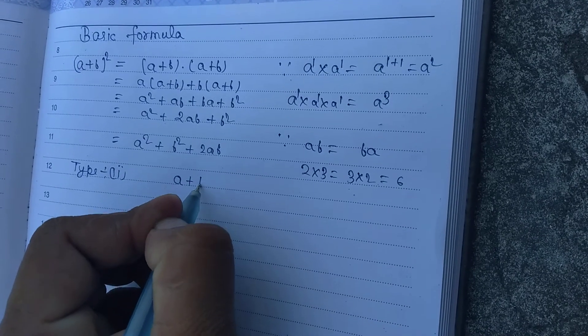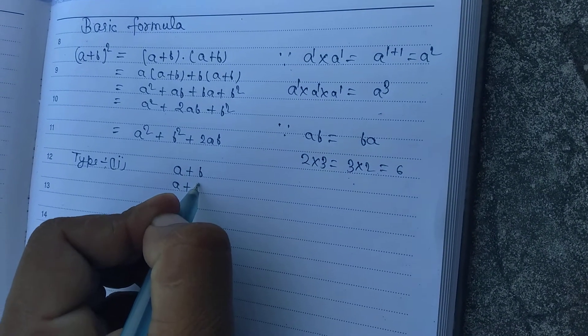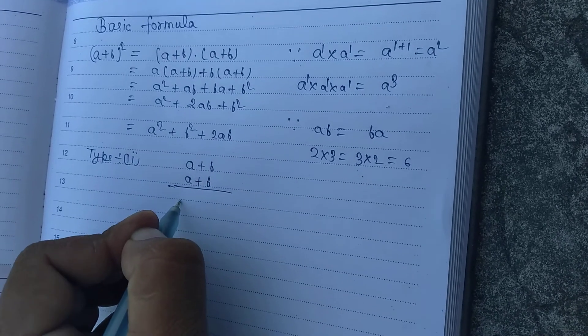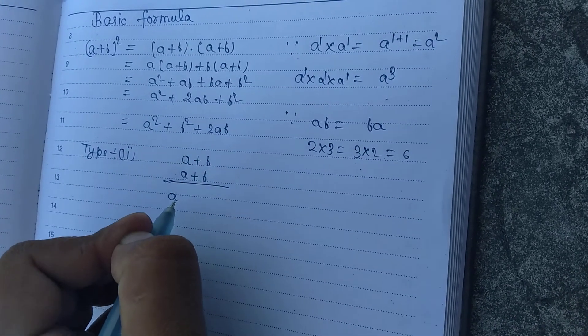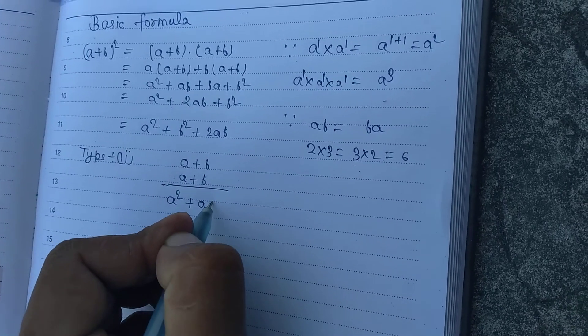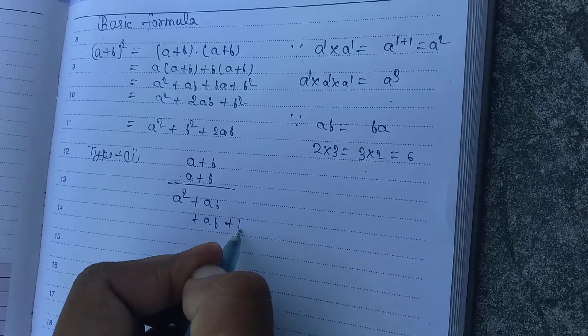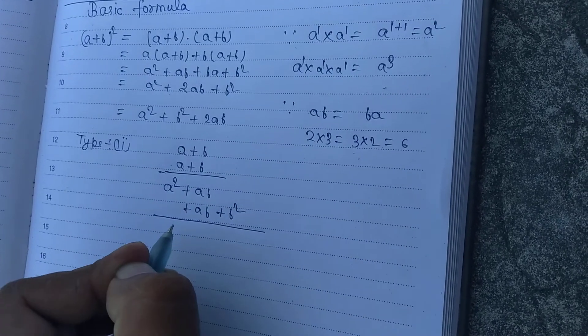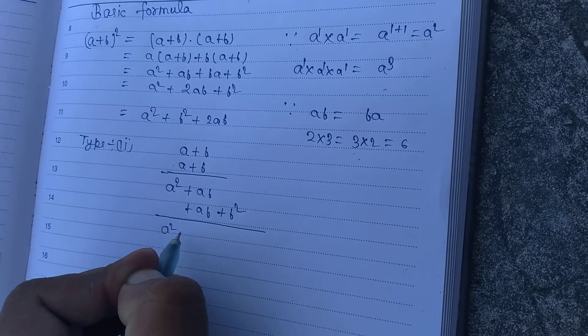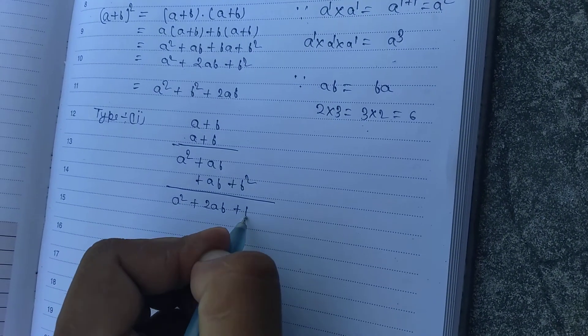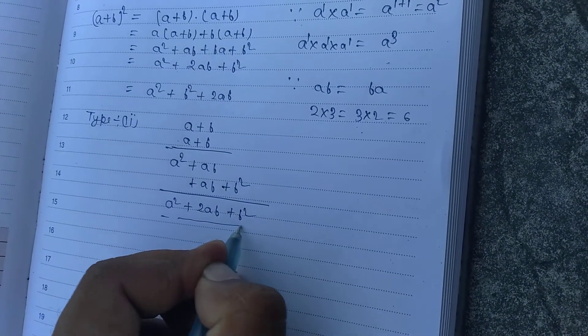Second type: a plus b, a plus b. When we multiply, a square, a b, a b, plus b square equals a square, 2 a b, plus b square. Okay.